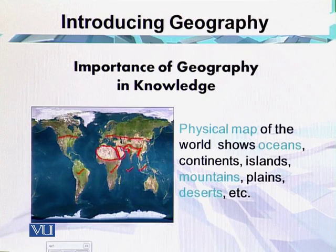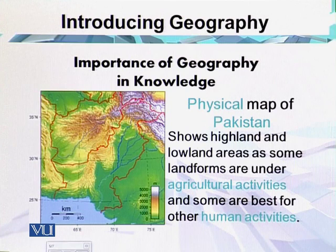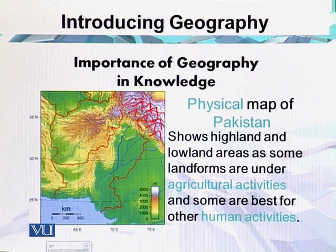The most important aspect of the physical map of the world is to discuss physical features. The physical map of Pakistan shows highlands and lowland areas — some landforms are under agricultural activity and some are best for other human activities. The northern part of Pakistan is covered with highlands, these being the Himalayan ranges. The north-western side is covered with the highest peak of Pakistan, which is K2.